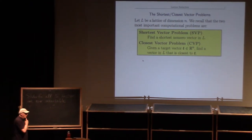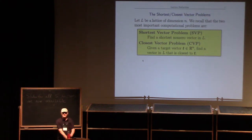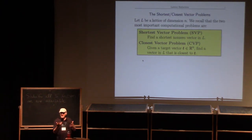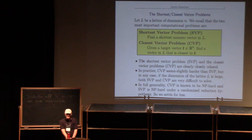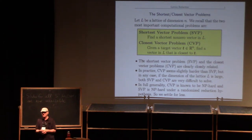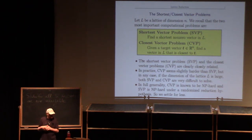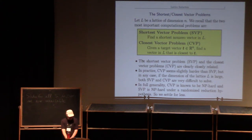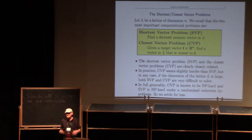Just to remind you from yesterday, the two important lattice problems are the shortest vector problem — trying to find the shortest nonzero vector in a lattice — and the closest vector problem, where you're given a target and you try to find the closest lattice point to that target. They're closely related: if you have a CVP algorithm you can use it to create an SVP algorithm, and vice versa with a slight dimension shift.